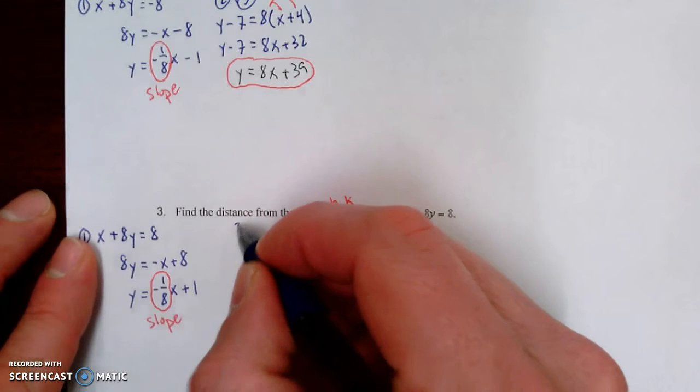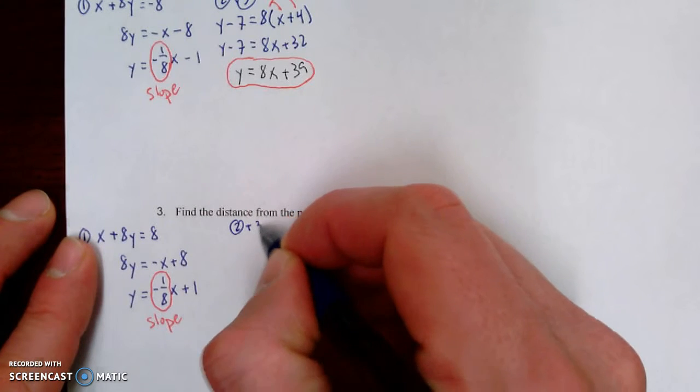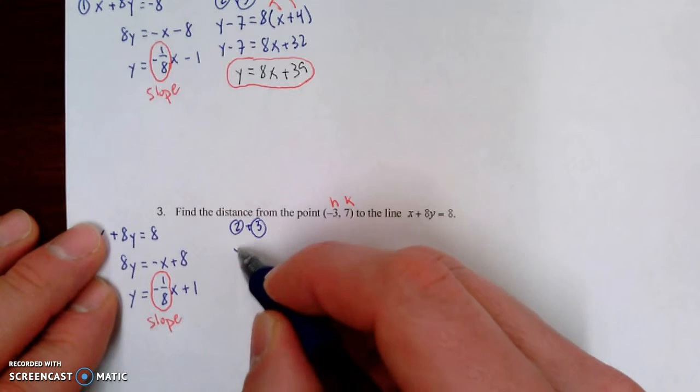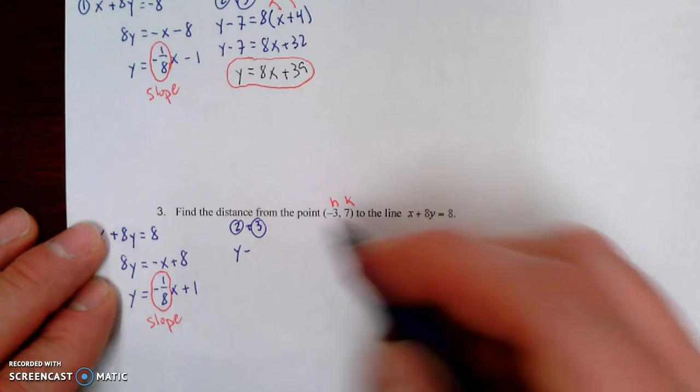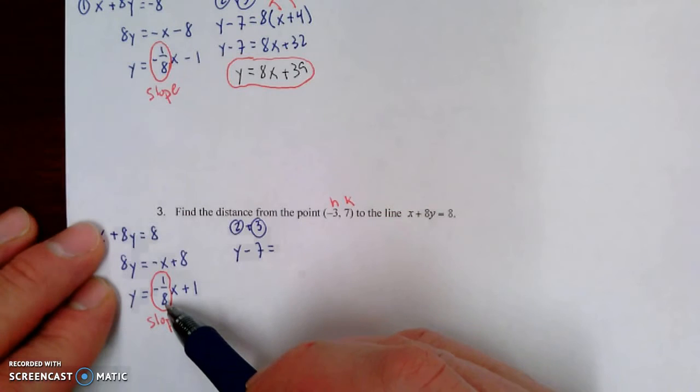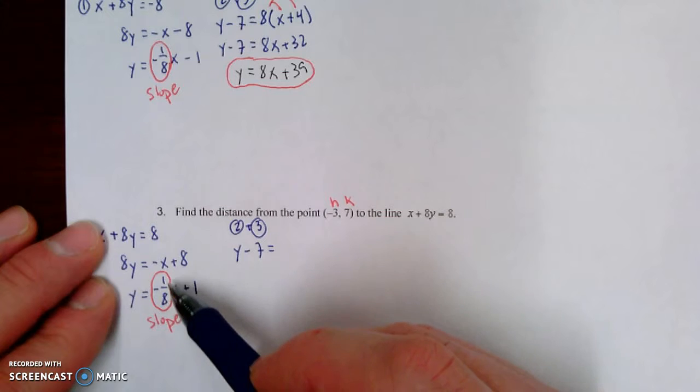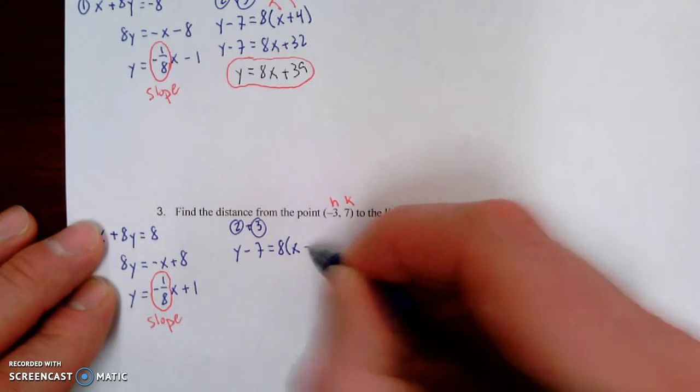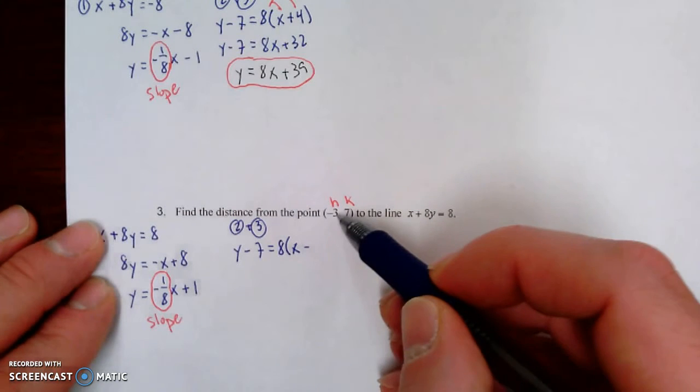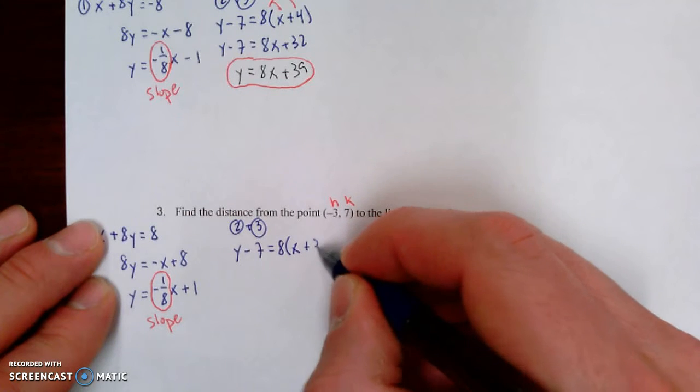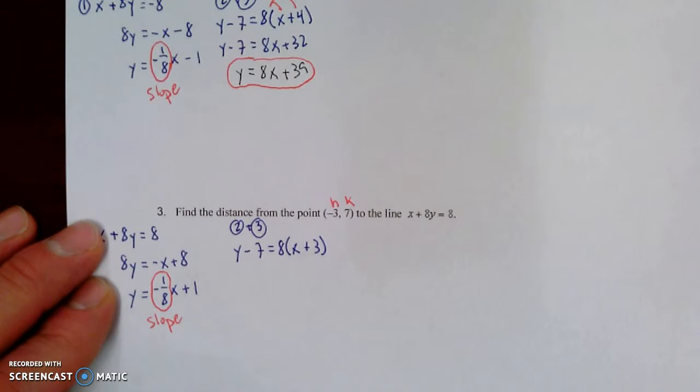Okay. So step two plus step three. Our point-slope equation is y minus k, k is seven here, equals slope m. Now our original slope was negative one-eighth, so the negative reciprocal of negative one-eighth is a positive eight over one, or just positive eight. So that's going to be x minus, and our h is negative three, so that's going to be x minus negative three, or x plus three. So there's our equation in point-slope form.